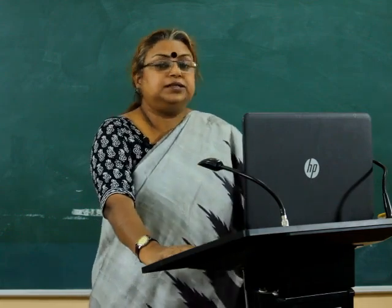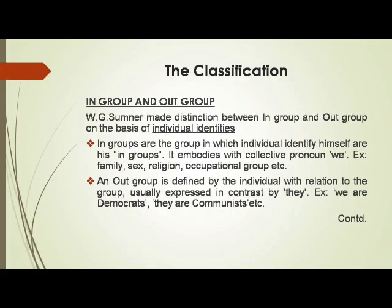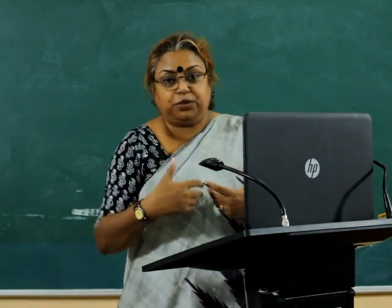The first classification is in-group and out-group. W.J. Sumner made a distinction between in-group and out-group on the basis of individual identity. In-groups are those in which an individual identifies himself — for example, as a first-year sociology student, you say 'we belong to this group.' When referring to your professors, that is your out-group. Vice versa, when professors say 'we the professors,' they are the in-group and students are the out-group.